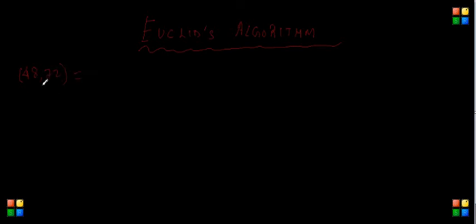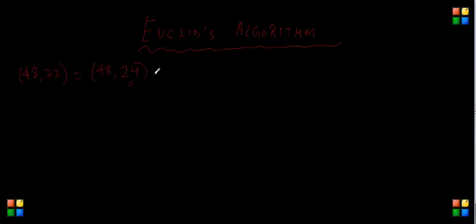What Euclid essentially said is: keep the smaller number intact and subtract the smaller number from the larger number. So I'm keeping 48 intact and subtracting 48 from 72, which gives 24. Now I repeat this process — my smaller number is 24, so I keep 24 intact and subtract 24 from 48, which is 24 as well.